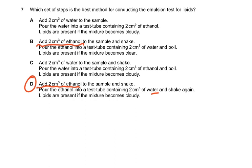Why was option B wrong? It said to add ethanol, shake, pour into water, and boil, and that lipids are present if the mixture becomes clear. That is wrong — it becomes cloudy, not clear. The solution looks clear when you add the ethanol because the lipid dissolves in it; it is only when water is added that it turns cloudy. Please listen again if this is unclear.